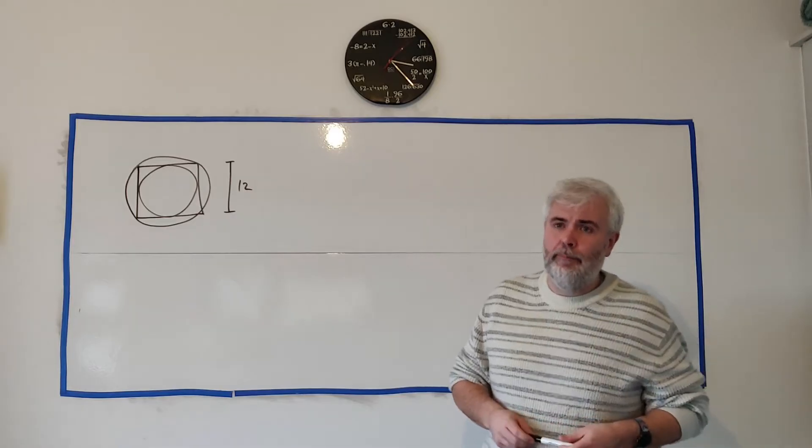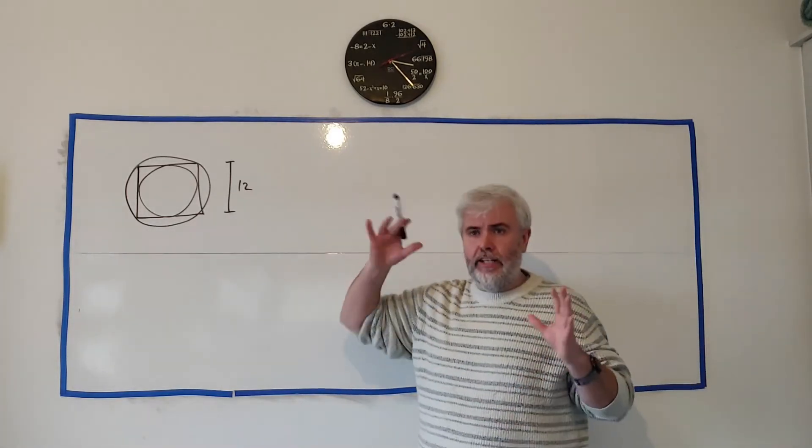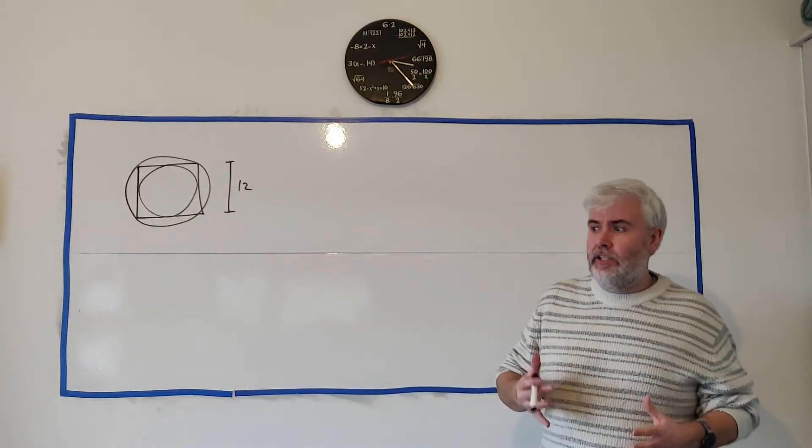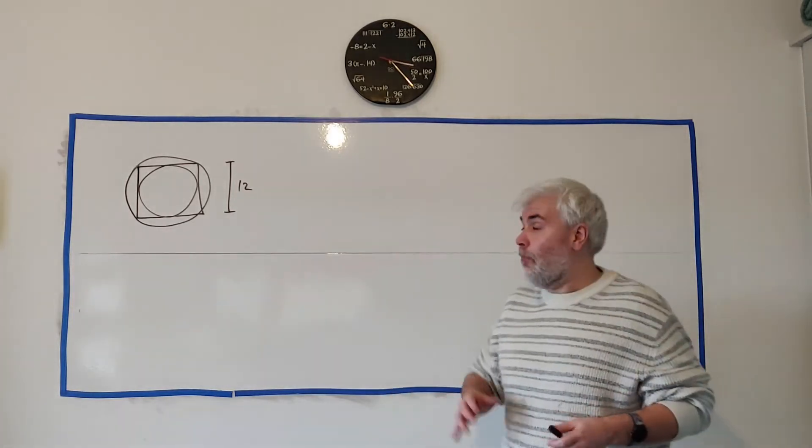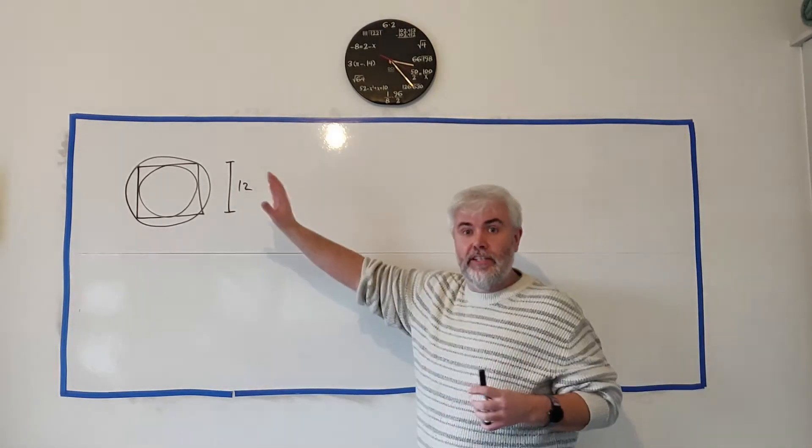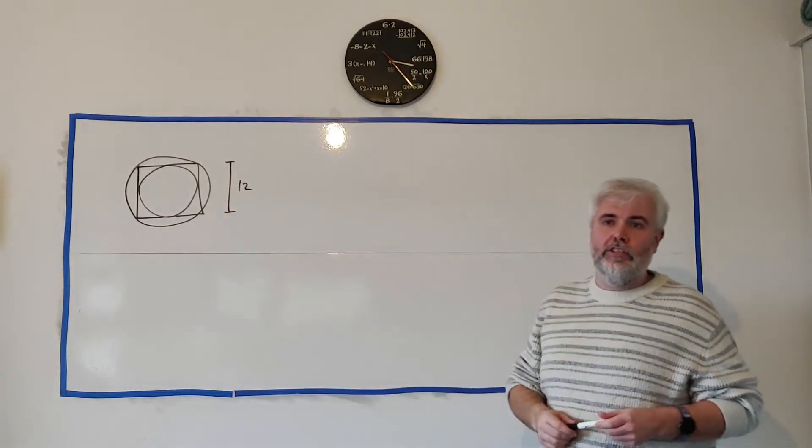This is question five from paper two and in this question we're going to be dealing with a circle and a square and we're basically just going to be working out some areas and some circumferences. Basically questions all about this shape here, this collection of shapes, circles and squares.